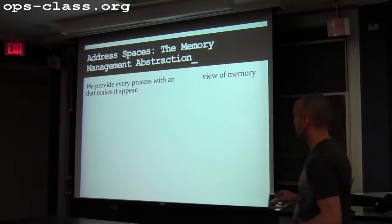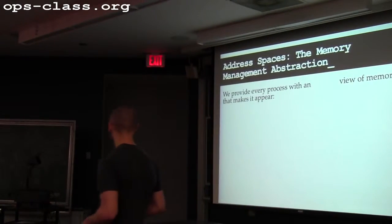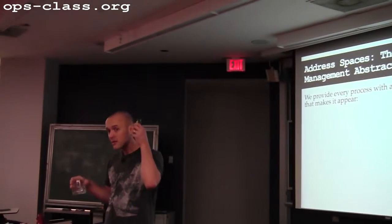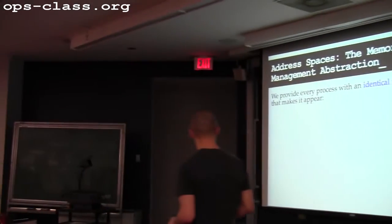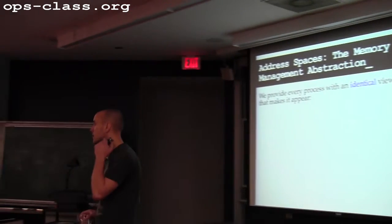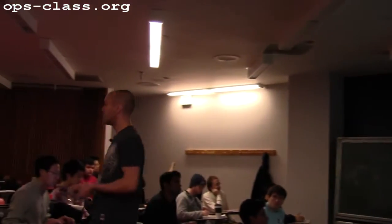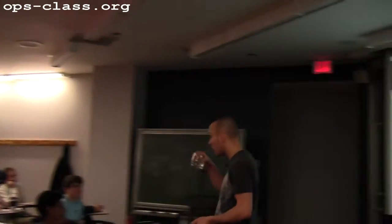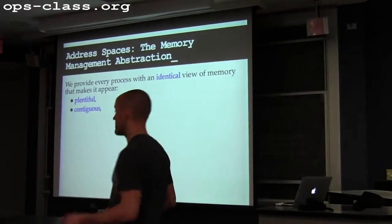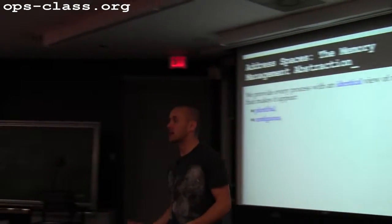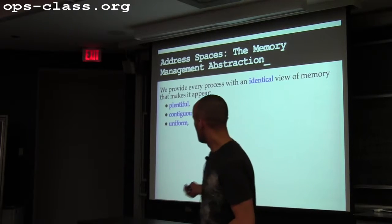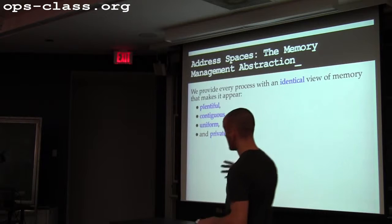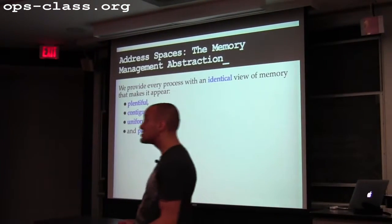The address space abstraction provides every process with a uniform, identical view of memory. I want it to appear plentiful — maybe even more memory than the system actually has. I want it to look contiguous, even though physically it might not be. And I want it to look private — unless a process explicitly chooses to share memory with another process, that memory is not shared by default.